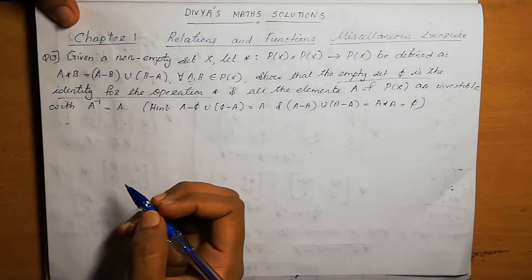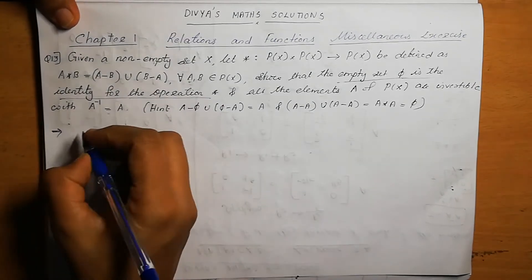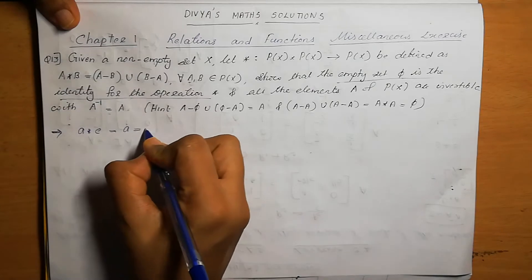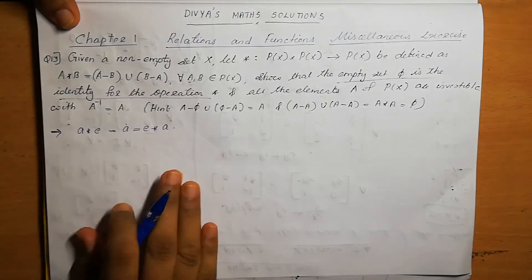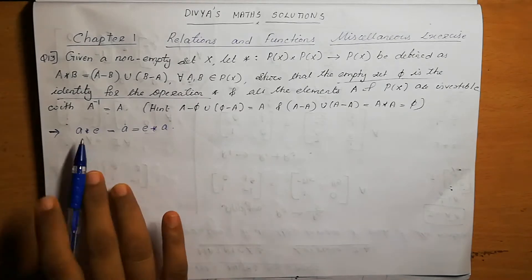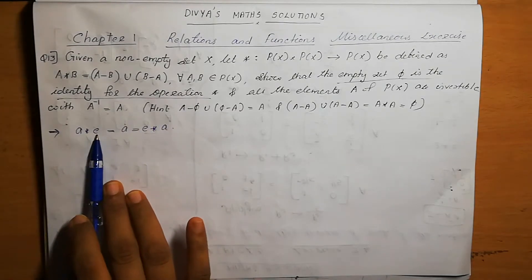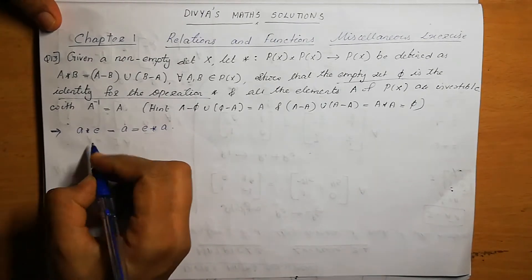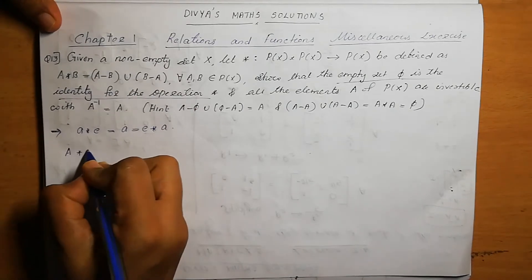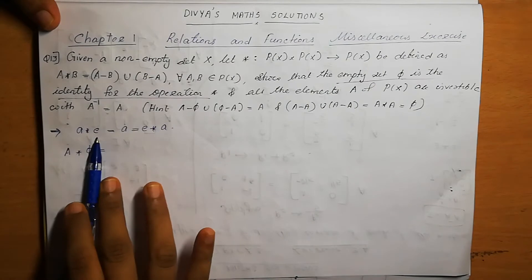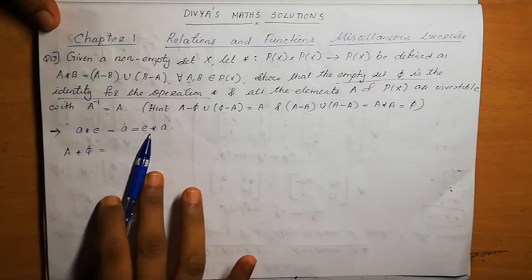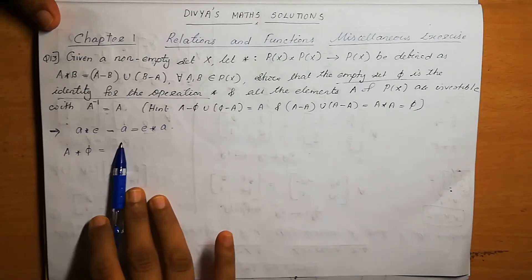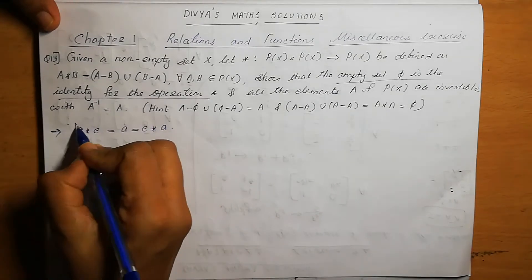We know the definition of identity: A star E equals A equals E star A. This is the definition of identity. Here A means capital A, and E means φ (null set), which is the identity we take. So we write A star φ equal to A, and φ star A equal to A. This condition is the definition of identity.